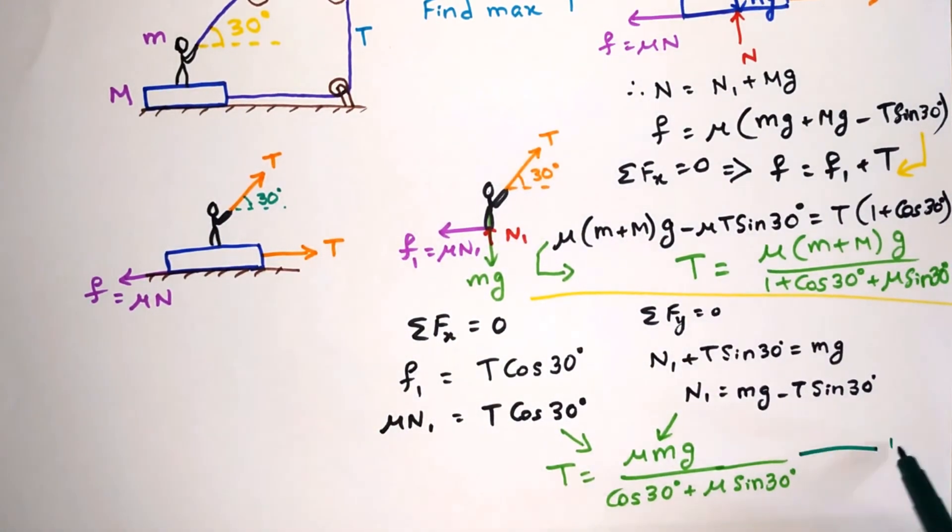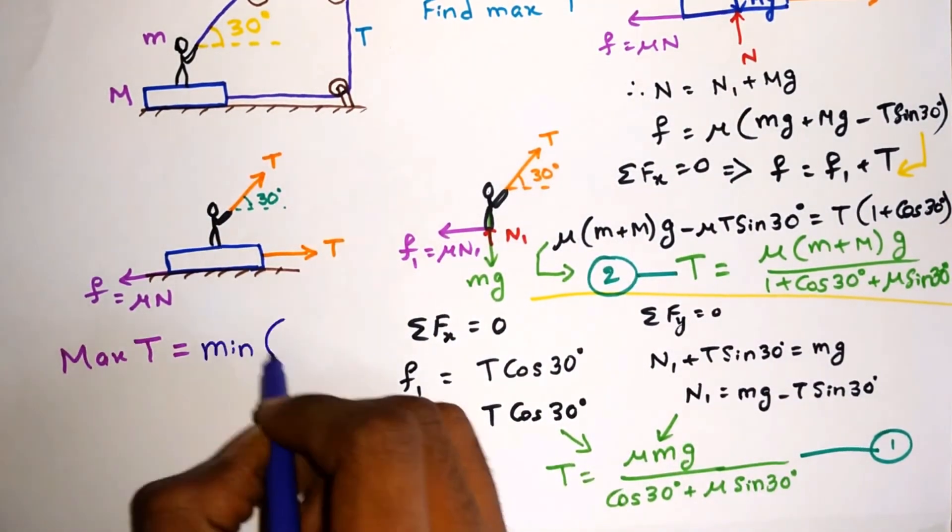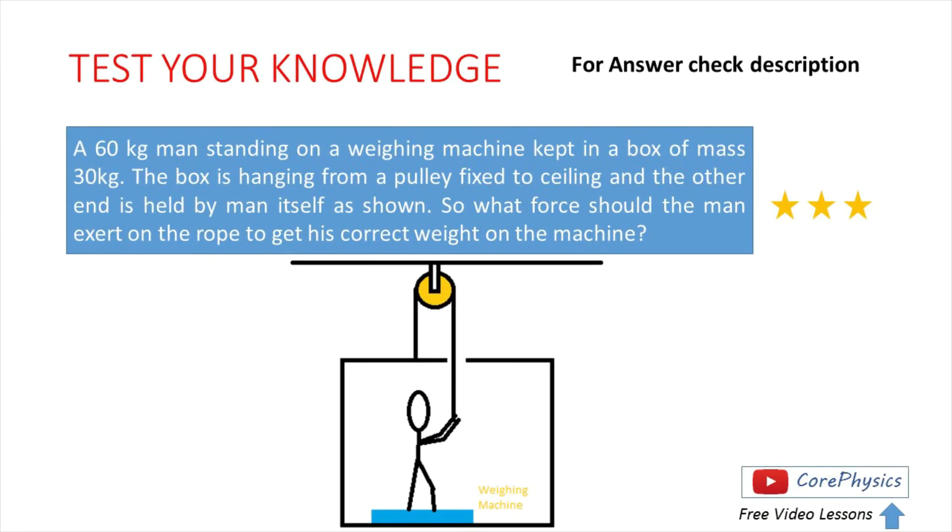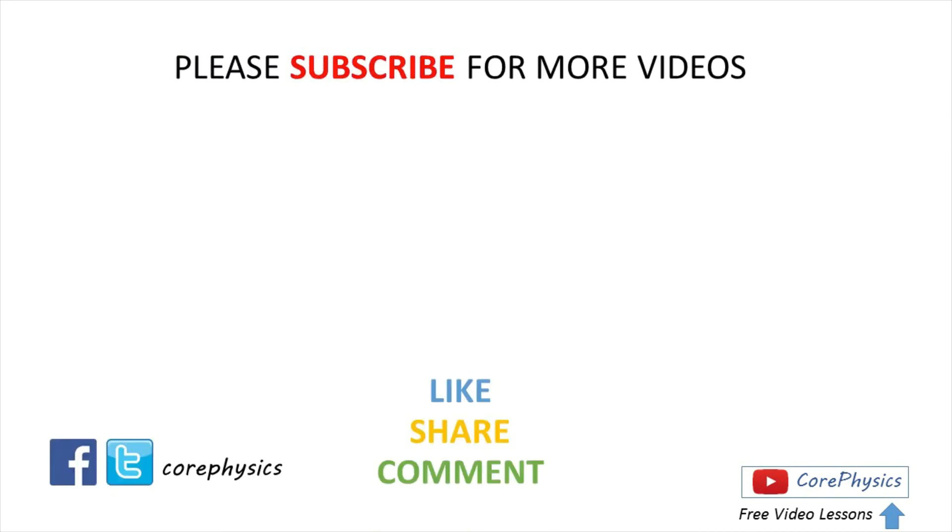Thus the maximum tension for the entire system to be stationary will be equal to minimum of these two tensions. Here are some practice questions for you. Check out my channel and subscribe for more videos. Thank you.